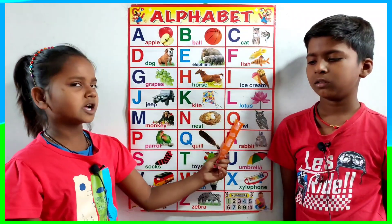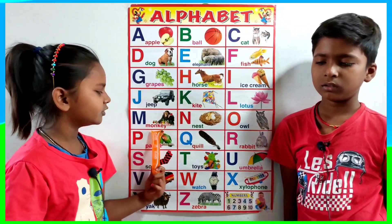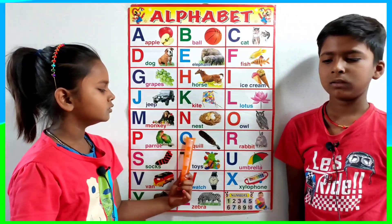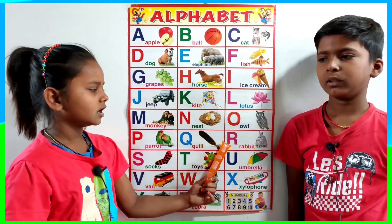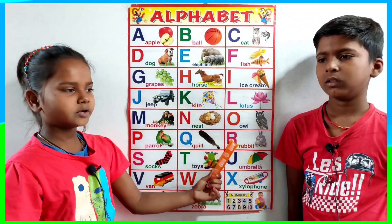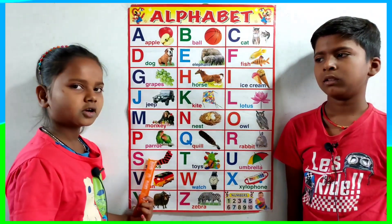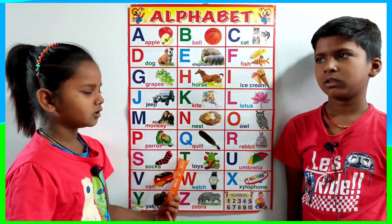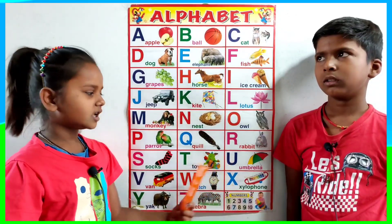O for owl, P for parrot, Q for quill, R for rabbit, S for socks, T for toys, U for umbrella.